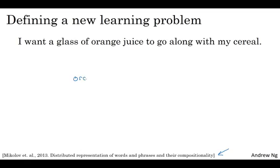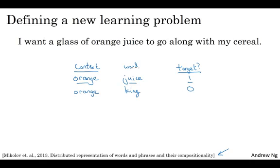The problem is given a pair of words like orange and juice, we're going to predict is this a context target pair. So in this example, orange juice was a positive example. And how about orange and king? Well, that's a negative example. So I'm going to write zero for the target. So what we're going to do is we're actually going to sample a context and a target word. In this case, we had orange and we'll associate that with a label of one.